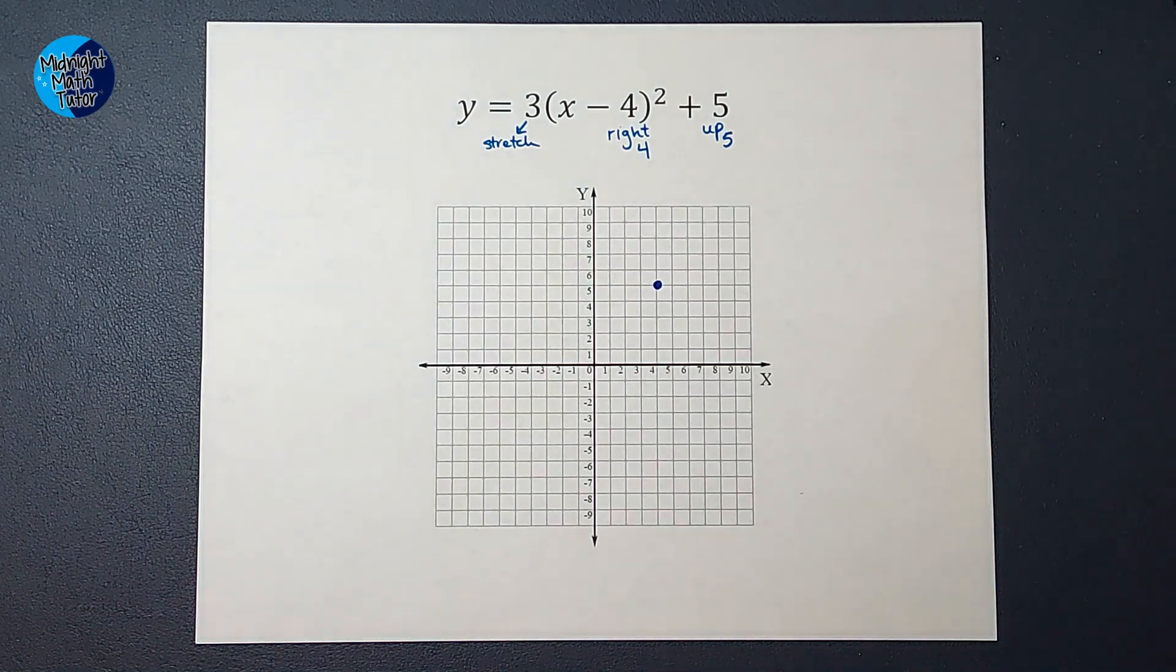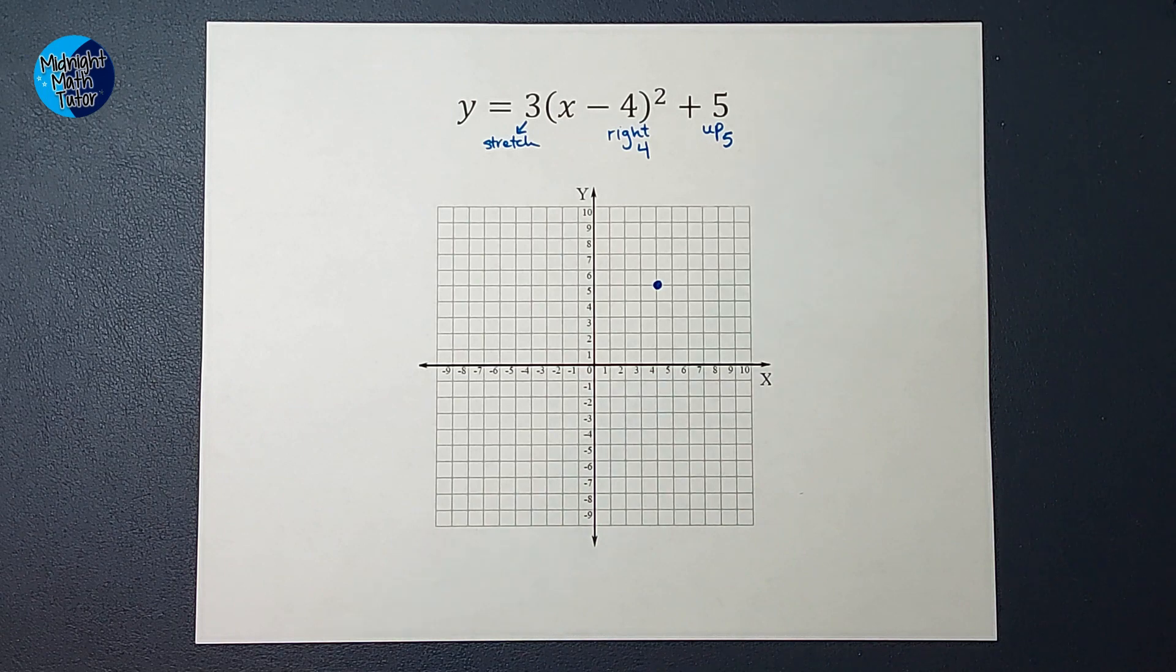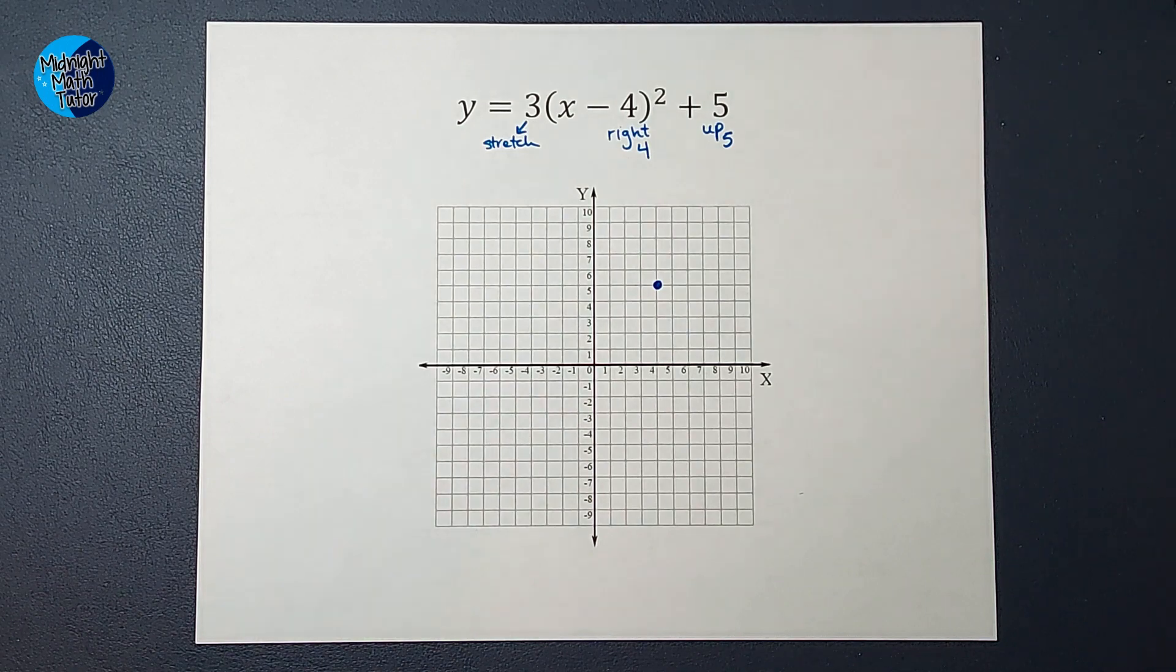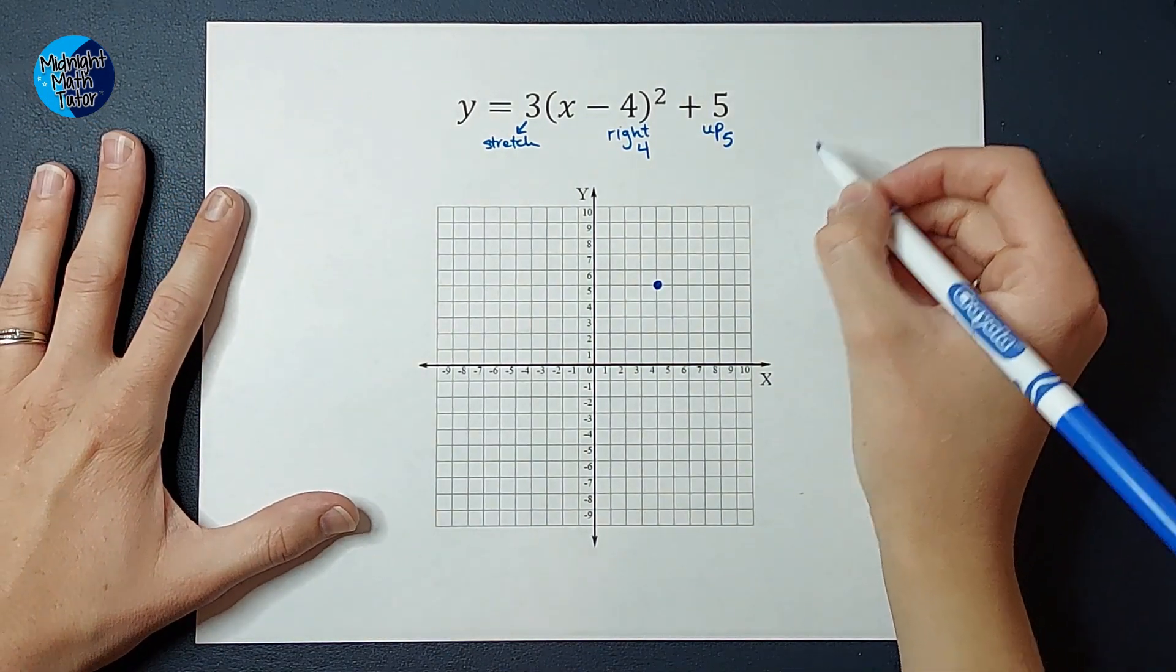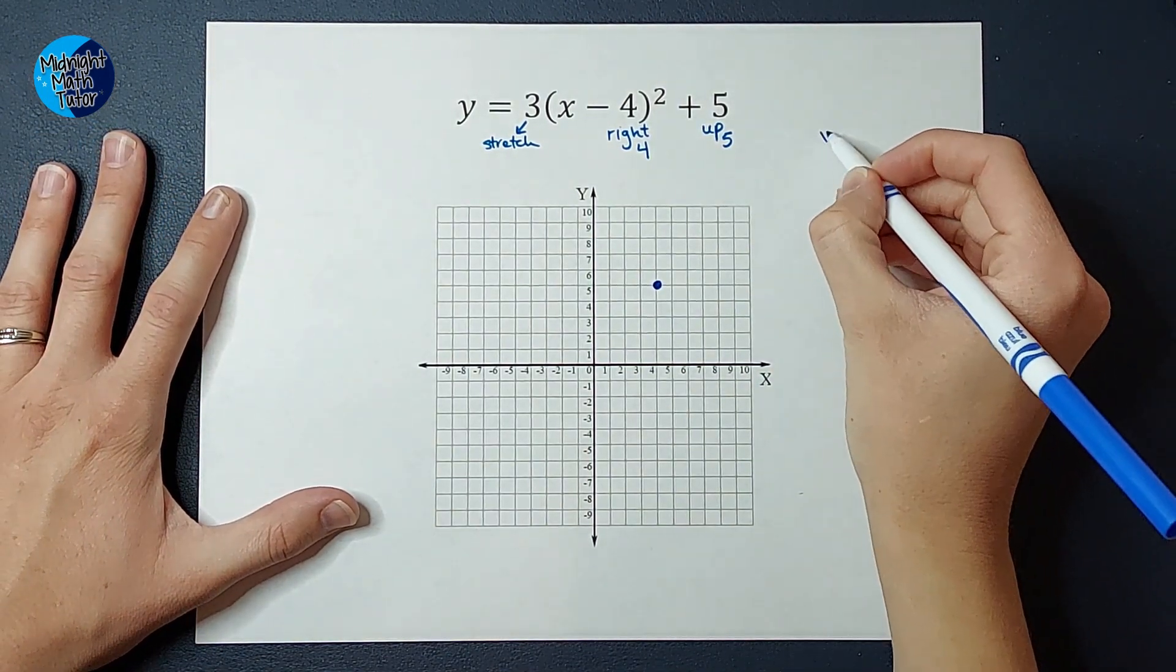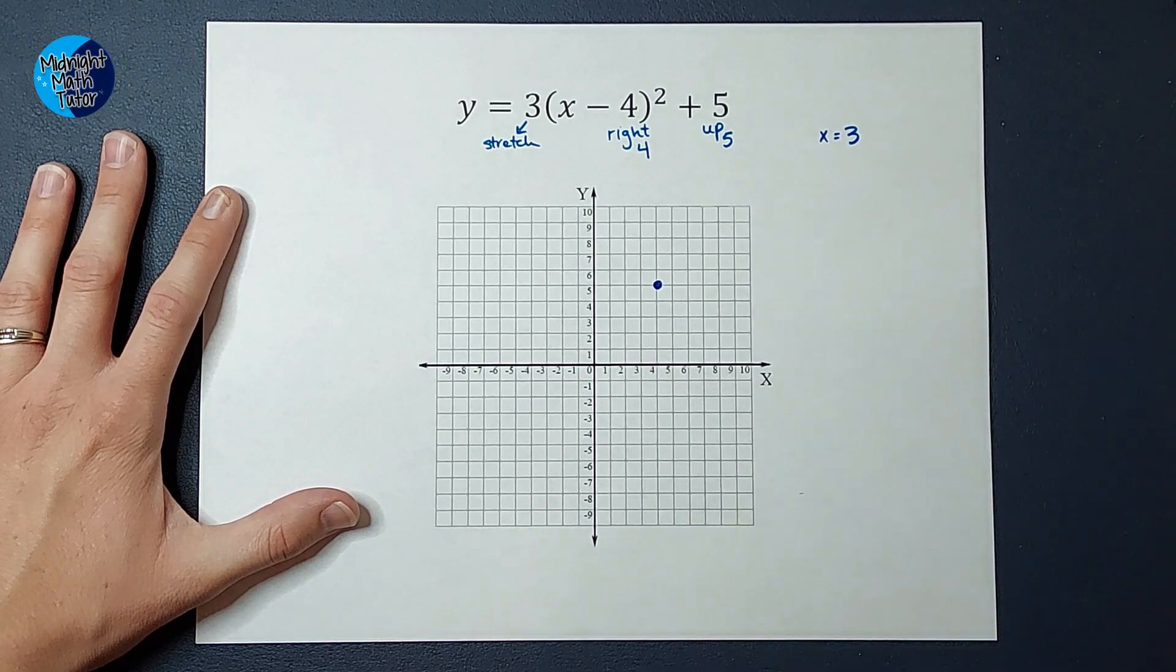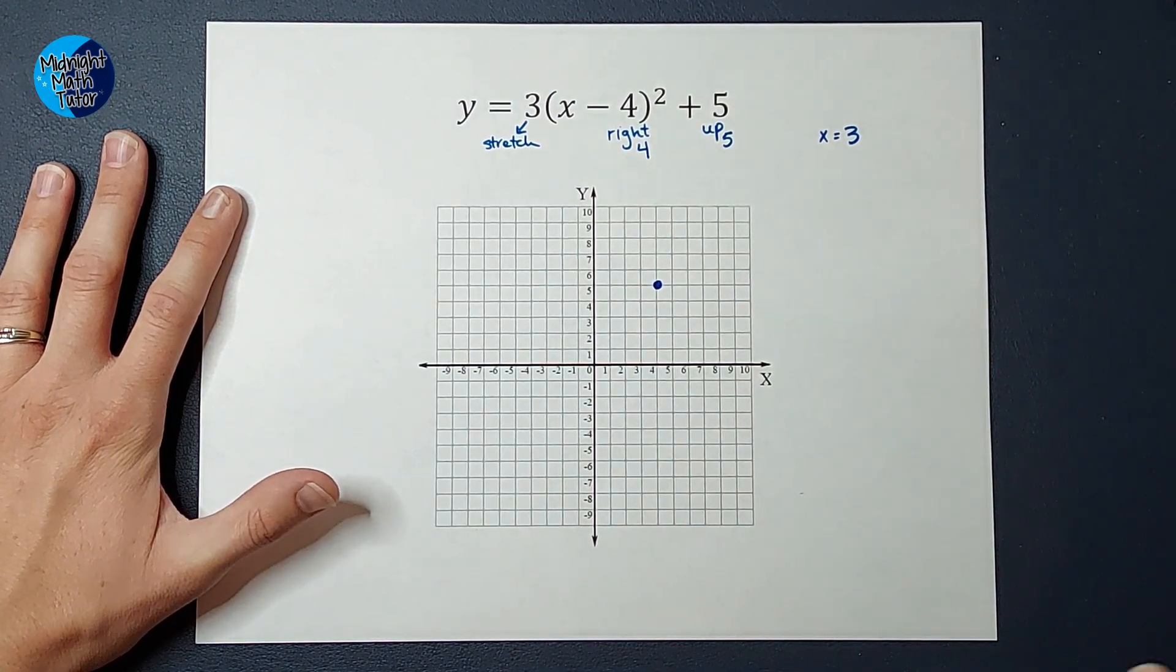But for now, we are going to actually plug in a point to kind of see what that looks like with that vertical stretch. So let's go ahead and plug in three and see what happens. So we're going to plug in three for X. I'm just going to write X equals three here. And we want to see what Y equals when X is three.